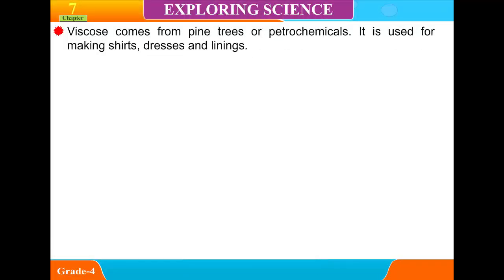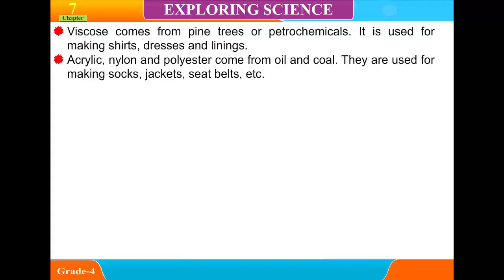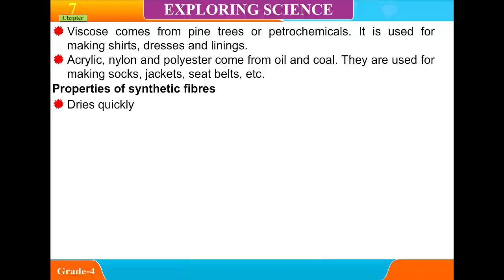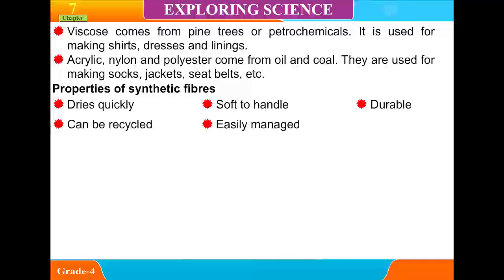Viscose comes from pine trees or petrochemicals and is used for making shirts, dresses, and linings. Acrylic, nylon, and polyester come from oil and coal and are used for making socks, jackets, seat belts, etc. Properties of synthetic fibers include: dries quickly, soft to handle, durable, can be recycled, and easily managed.